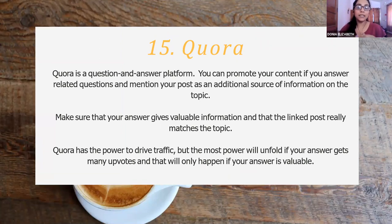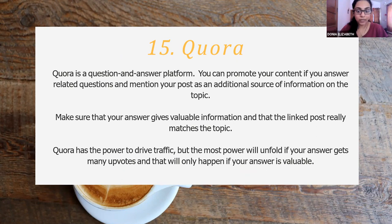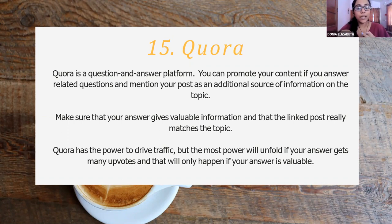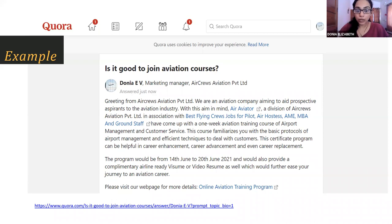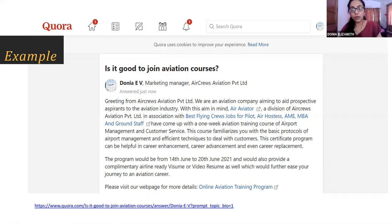Then coming to Quora. Quora is also a very sought-after platform because it is, as most of you might know, a question and answer platform. Here, to promote your content, you need to find that particular question which is exactly in line with your blog event and provide an answer with a short synopsis on the event, then provide the link to that particular blog post. This answer has to be upvoted to drive traffic to your blog website. This is an example of how we promoted on Quora — we gave a short synopsis about the program and answered the question 'Is it good to join aviation courses?', mentioning why this aviation course is good and providing a link to drive traffic from Quora to our website.